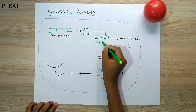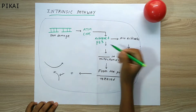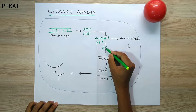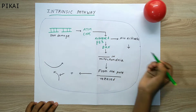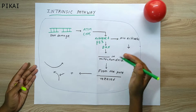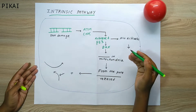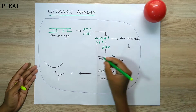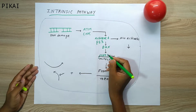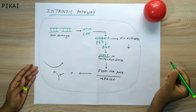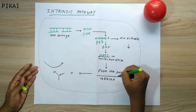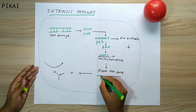This activated p53 protein then activates BAX. After activation by p53, BAX creates pores in the mitochondrial membrane, so some pores get created on the mitochondrial membrane.